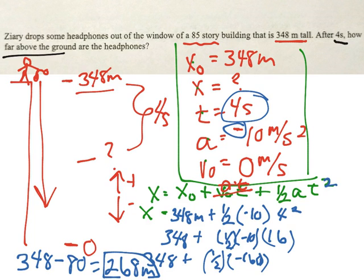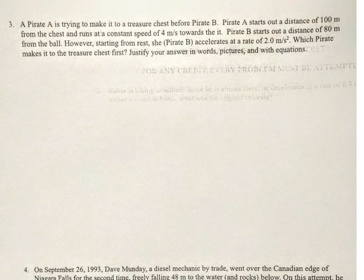Plug in all your numbers. X we don't know, x₀ is 348 meters. V₀ is zero, so that whole term crosses out. Then we have ½ times acceleration, negative 10, times t which is 4 seconds squared. So 348 plus ½ times negative 10 times 16.